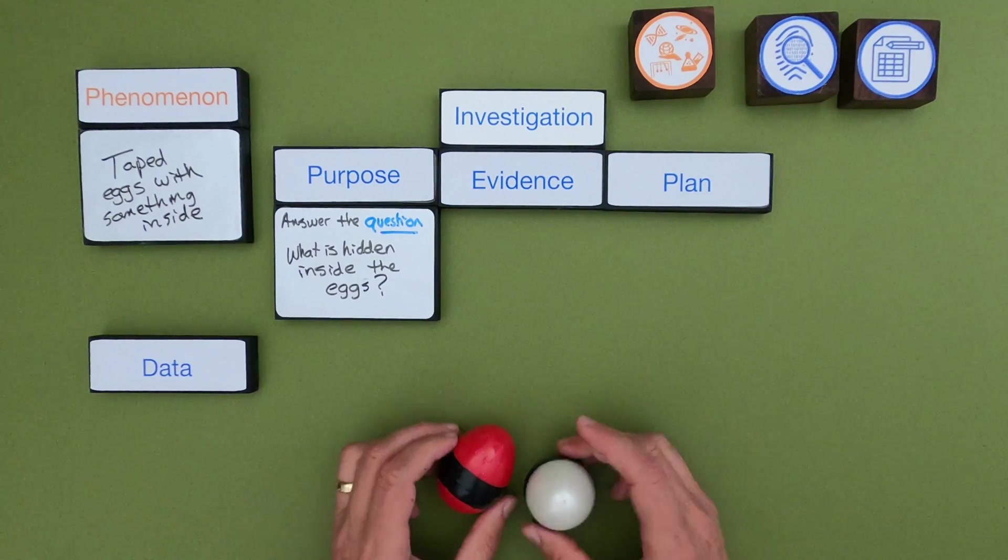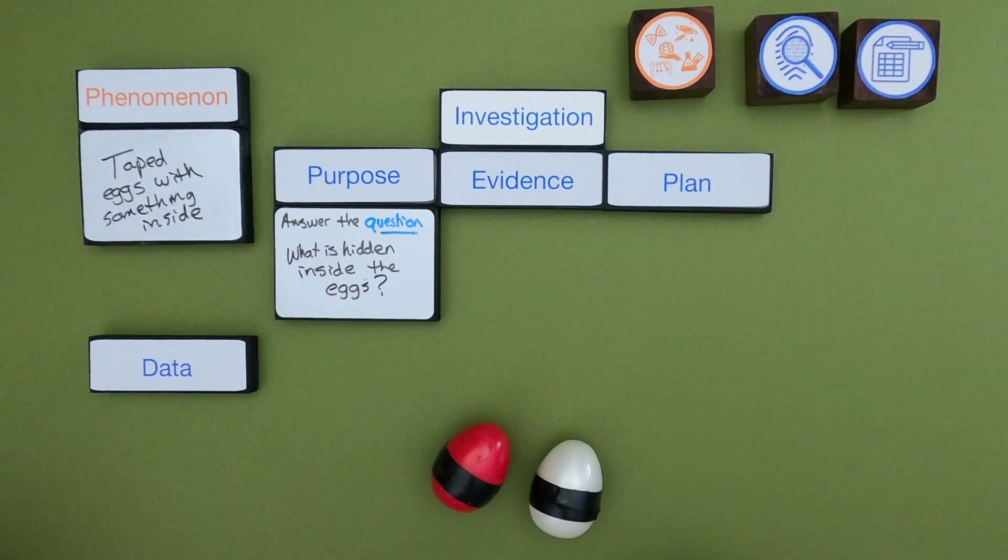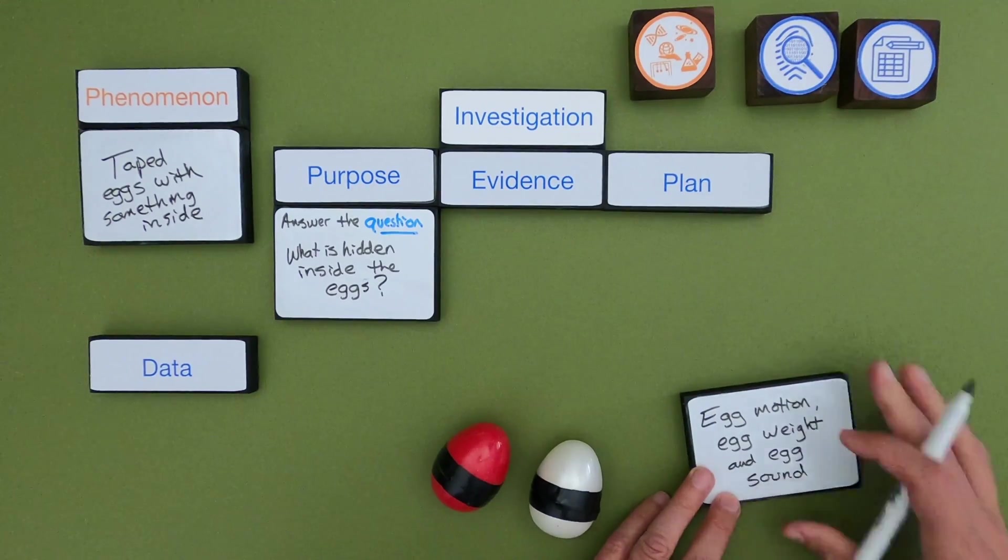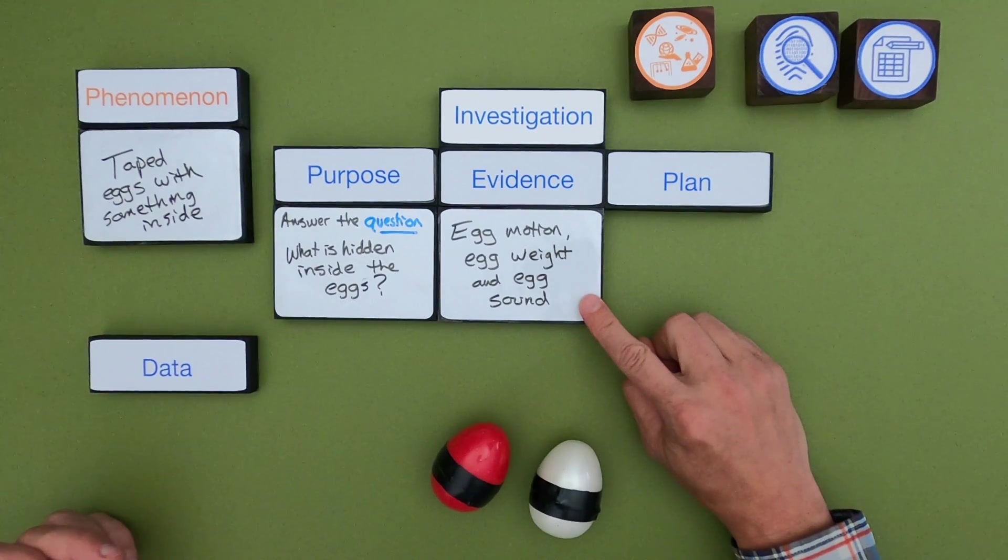And then the next step is what evidence could I gather that would help me answer that question. So let me write down some evidence that might be helpful. The easiest types of investigation are those where we just use our senses.